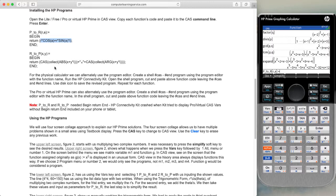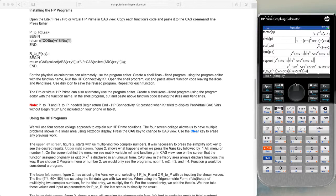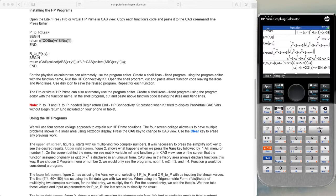Then, if we use control C to copy the item, go over to our calculator, control V to paste the item into our calculator and press enter, we have added the item to our calculator.